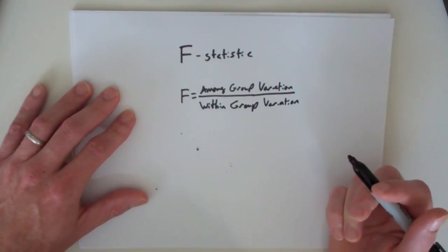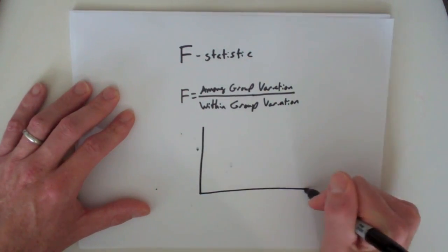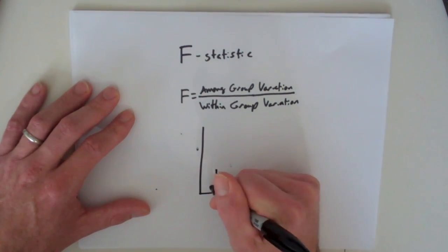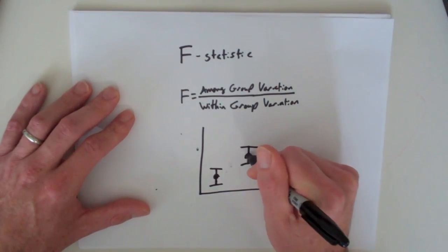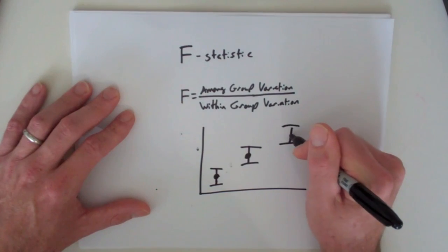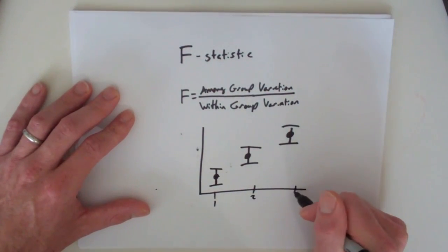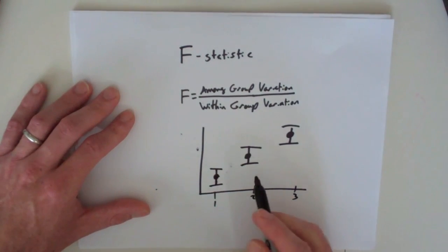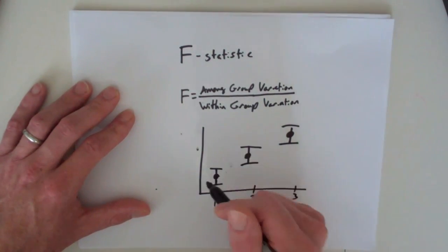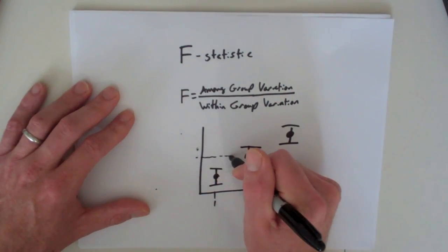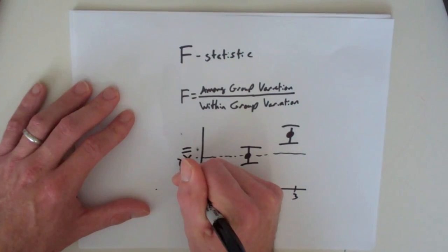What these two things are is actually really simple. The among group variation, the numerator in this, is simply, if we have multiple groups, here are three groups, group 1, group 2, group 3, with the big dot being their means. What we can also calculate is a mean for all groups. We'll call this x-bar-bar. This is the grand mean.